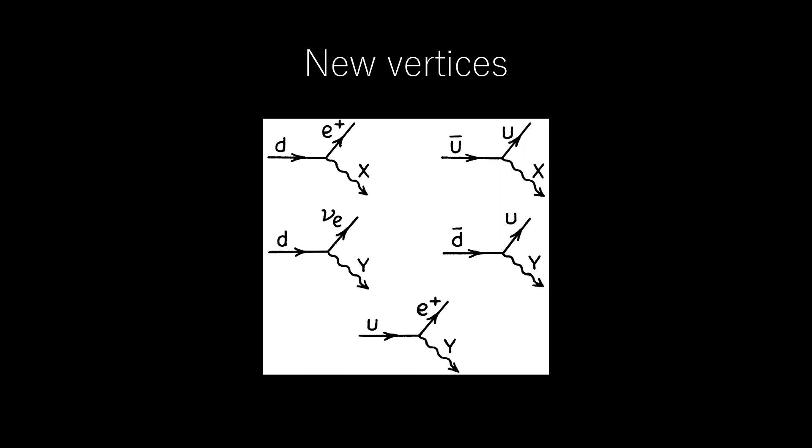The new vertices in the theory are shown in figure. As always the lines can be reversed by replacing particle and anti-particle. Any process can occur that can be drawn with the vertices of the standard model plus these.